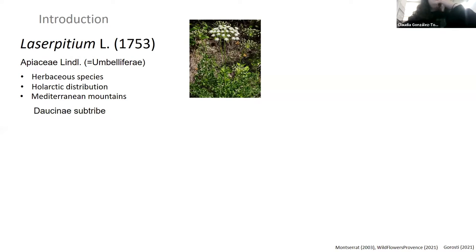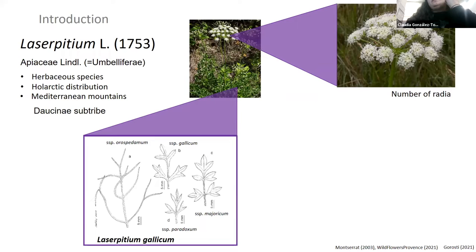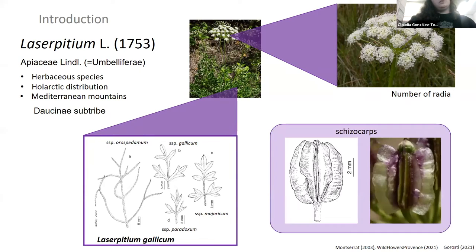So how do we distinguish the Laserpitium species? Well, we can use basically the number of radii of the inflorescence, but we cannot use other morphological features like leaf morphology because within the same species, we can find several subspecies with completely different leaf morphology.